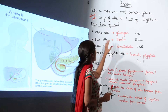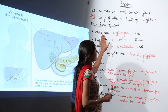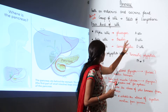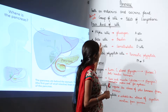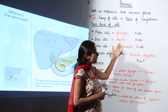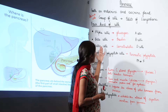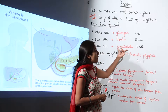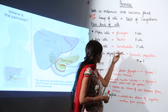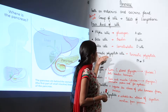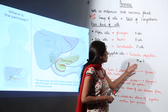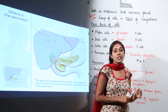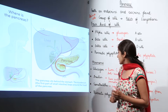To remember: alpha cells or A cells secrete glucagon; beta cells or B cells secrete insulin; delta cells or D cells secrete somatostatin; and pancreatic polypeptide cells, or PP or F cells, secrete pancreatic polypeptide.